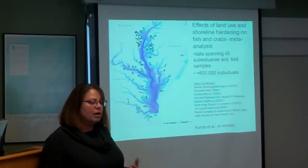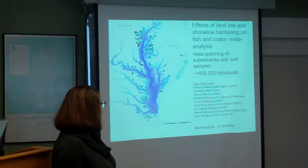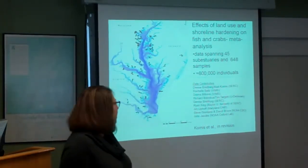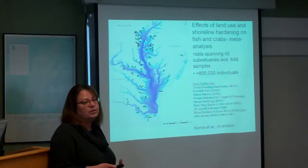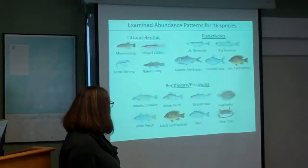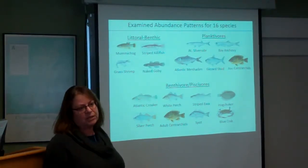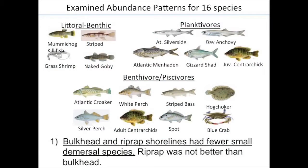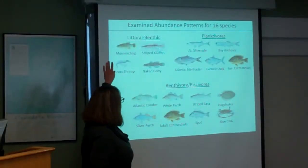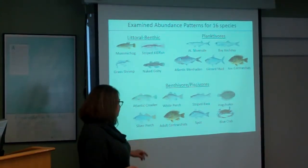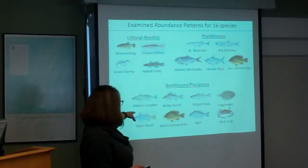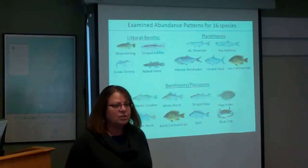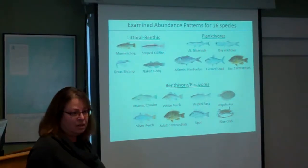Among all of us, we had data on 45 sub-estuaries within Chesapeake Bay, over 600 samples, and lots and lots of individuals. By looking at this larger dataset, we were able to pull apart a lot of relationships that the individual studies were not able to. We looked at factors affecting the abundance of basically just the 16 most abundant species in our samples, ranging from forage species like mummichogs and anchovies and spot, to some important fishery species — croakers, striped bass, and blue crabs.